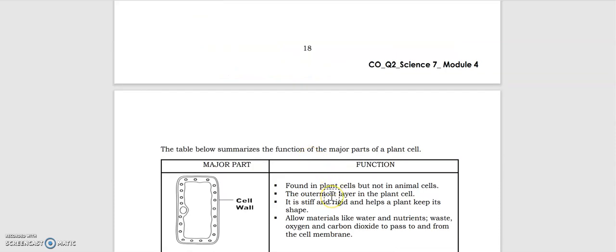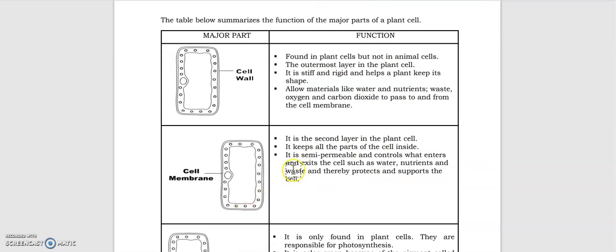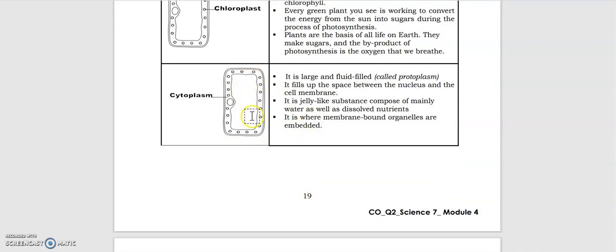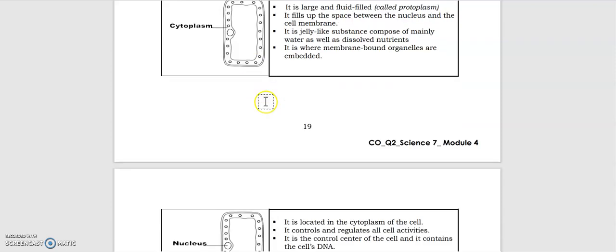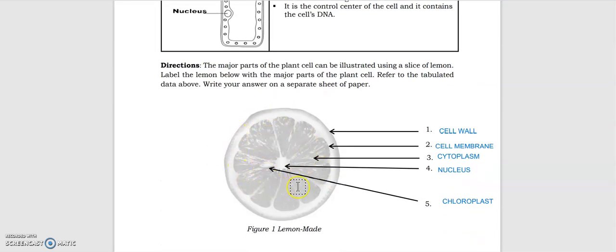Here are the major parts of a plant cell. First is the cell wall - this gives the shape of the plant cell. Cell membrane, the second layer in the plant cell, keeps the parts of the cell inside. This is semi-permeable. And chloroplast, it is only found in plant cells. It is green because of the pigment chlorophyll. Then cytoplasm - it's the large and fluid-filled space between the nucleus and the cell membrane. This is true even in animal cells. Then we have the nucleus, the control center of the cell. If you are given here a lemon, this part is the cell wall, then the cell membrane, the cytoplasm, the nucleus, then the chloroplast.